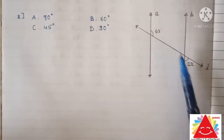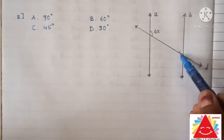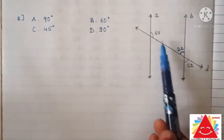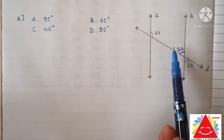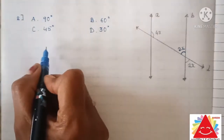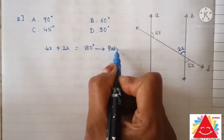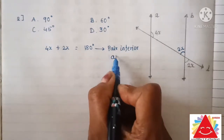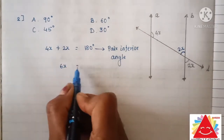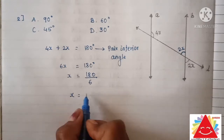In this figure, we cannot directly see a relation between angle 4X and angle 2X. But we can find this angle easily because it is the vertically opposite angle of 2X, so this angle will also be 2X. Now we get an interior pair of angles and we can use the property that the sum of a pair of interior angles equals 180 degrees. So 4X plus 2X equals 6X equals 180 degrees, giving us X equals 180 divided by 6, which means X equals 30 degrees.